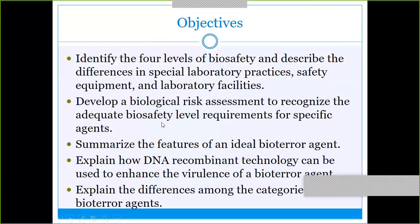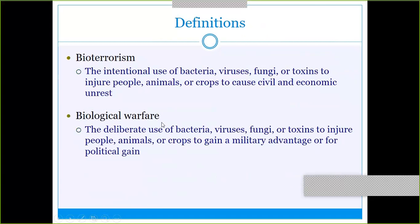The definition of bioterrorism is the intentional use of any microbes — bacteria, viruses, fungi, parasites, or even the toxins they produce — to purposefully injure people, animals, or crops. Biological warfare is using that to gain an advantage over another country or another part of a country.